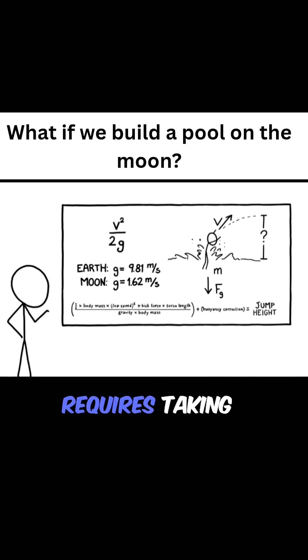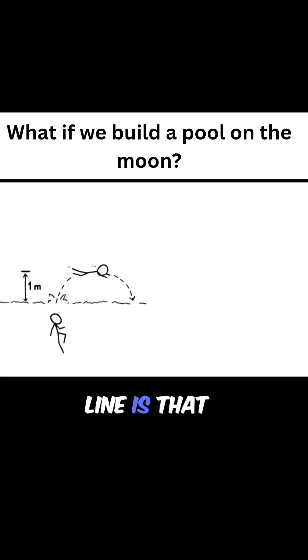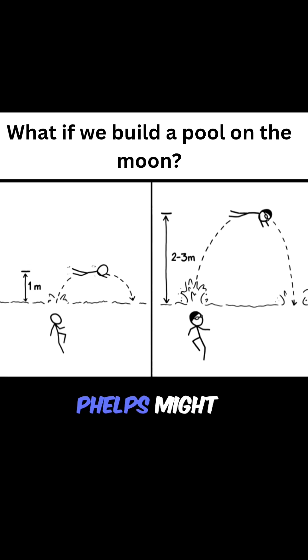Calculating the height a swimmer can jump out of the water requires taking several different things into account, but the bottom line is that a normal swimmer on the moon could probably launch themselves a full meter out of the water. An Olympic swimmer like Michael Phelps might manage 2 or 3 meters.